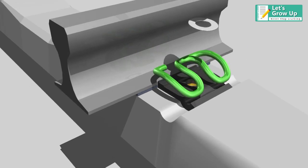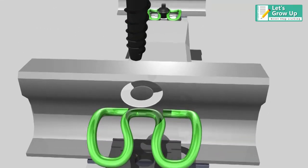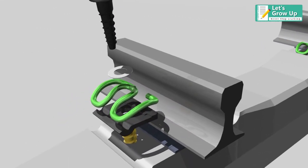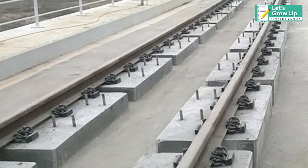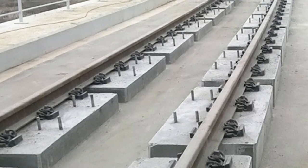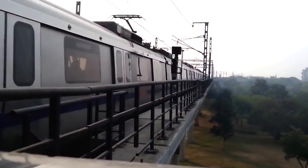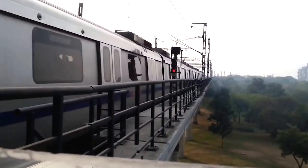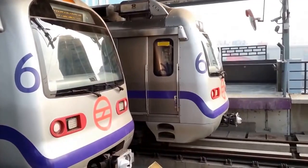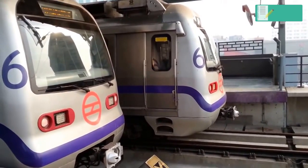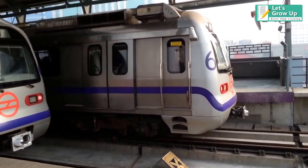Normally, SKL 12 is used in ballastless track and it can reduce transmission of vibration due to its own structure. For example, the Indian Metro has been updated with the ballastless fastening system.